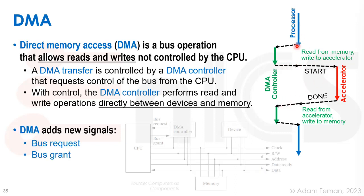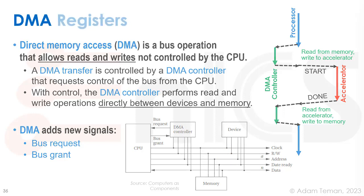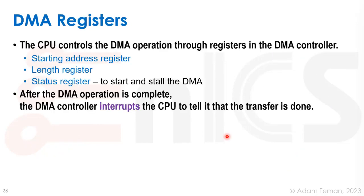The DMA can transfer data to and from the Ethernet port and on-chip memory without the processor dealing with it. Since the DMA is a new bus master alongside the CPU, we need simple arbitration. We can add a direct request-and-grant mechanism between the DMA controller and the CPU. The CPU can then grant access to the DMA controller to move data between the device and memory without going through the CPU.